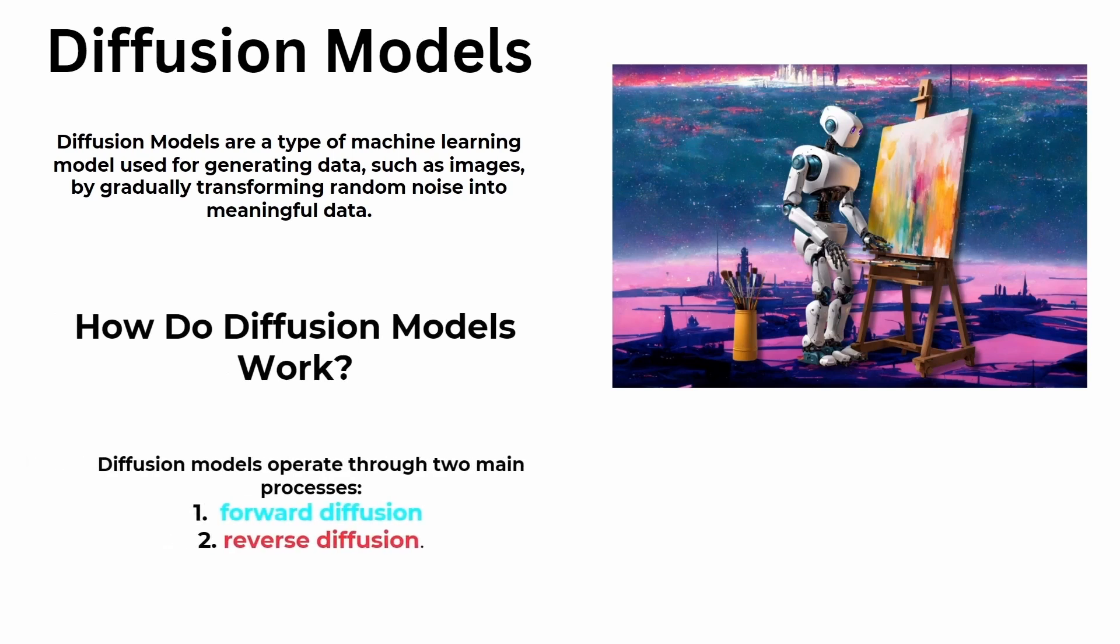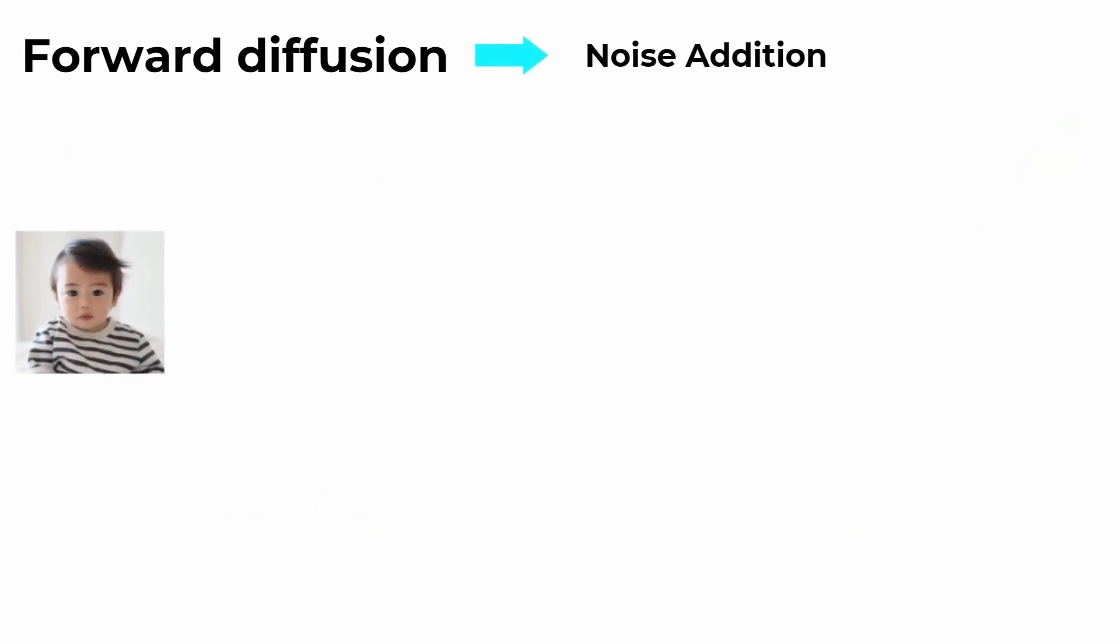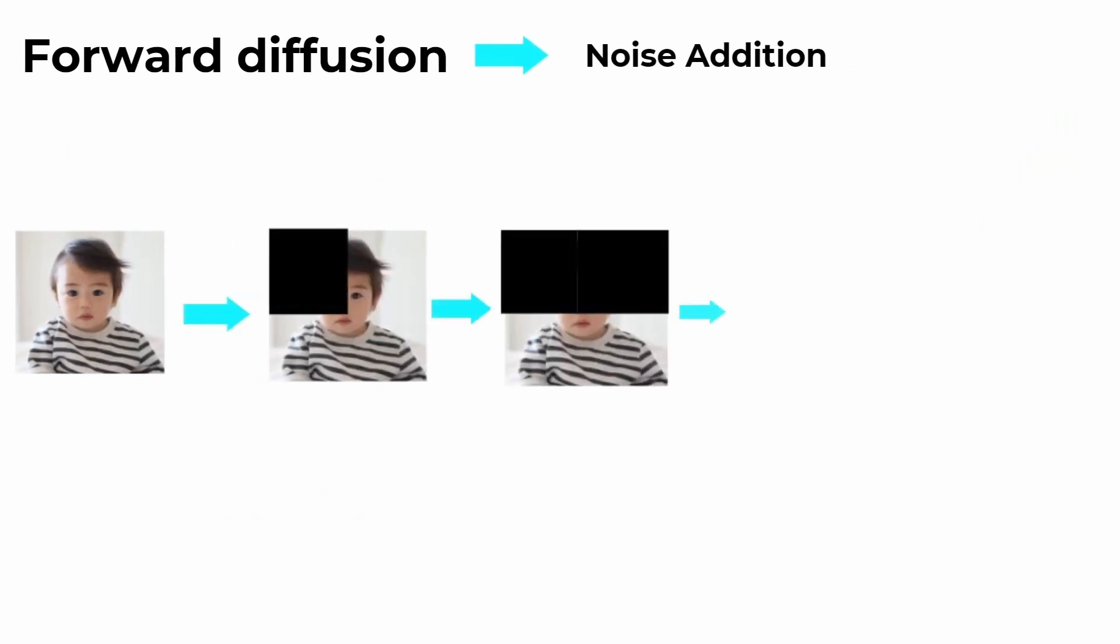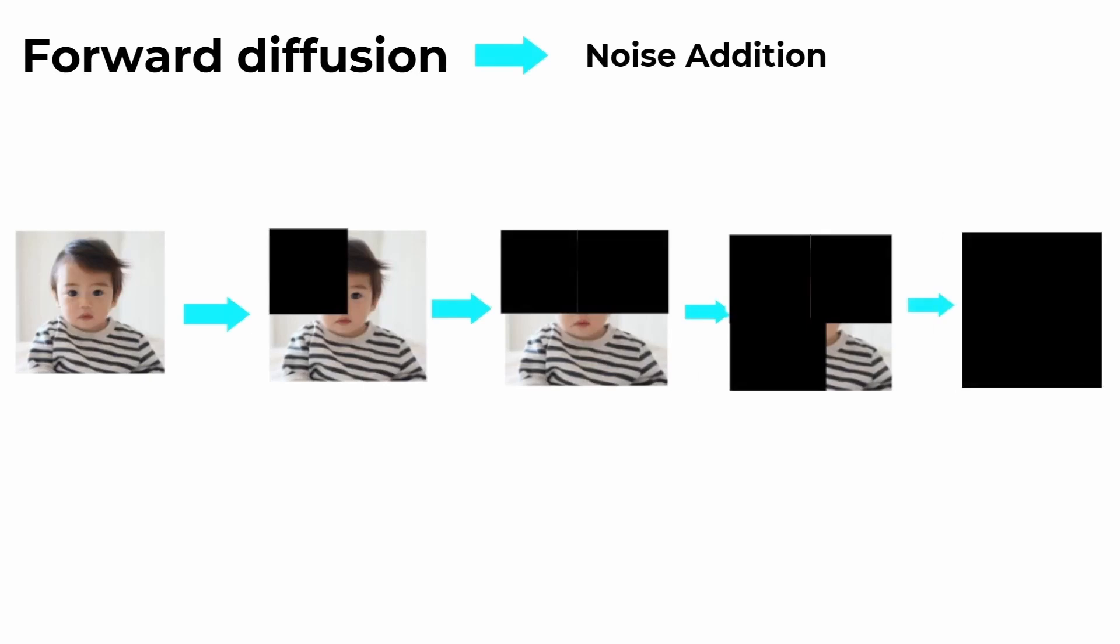Diffusion models operate through two main processes: forward diffusion and reverse diffusion. In forward diffusion, we add noise one by one until complete noise is added to the images.